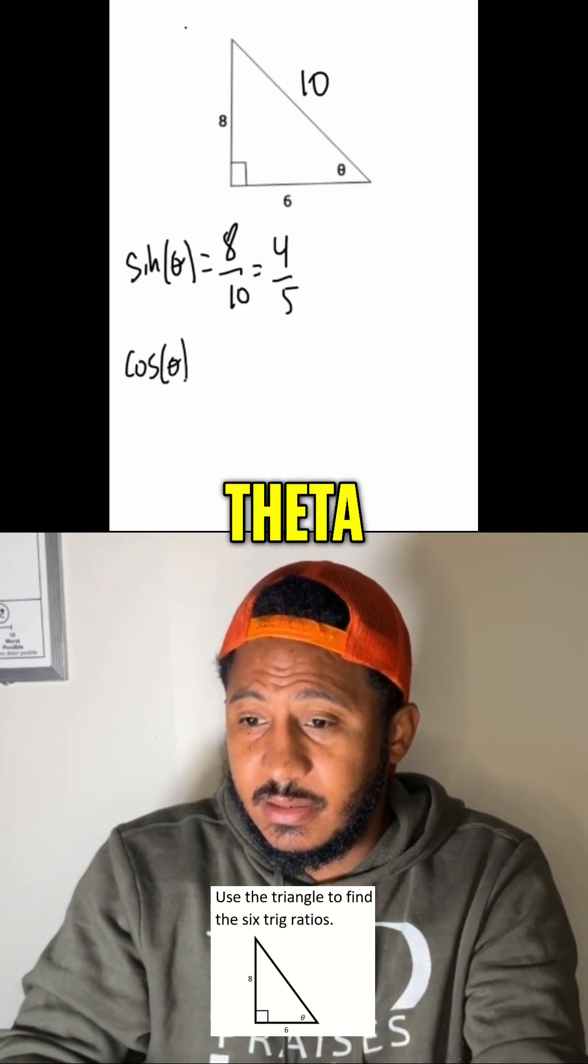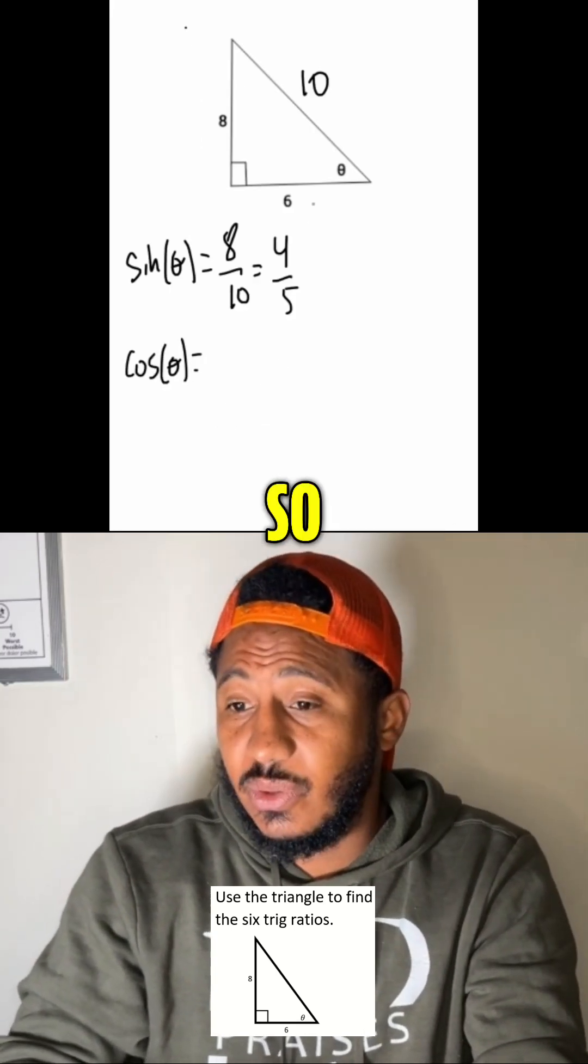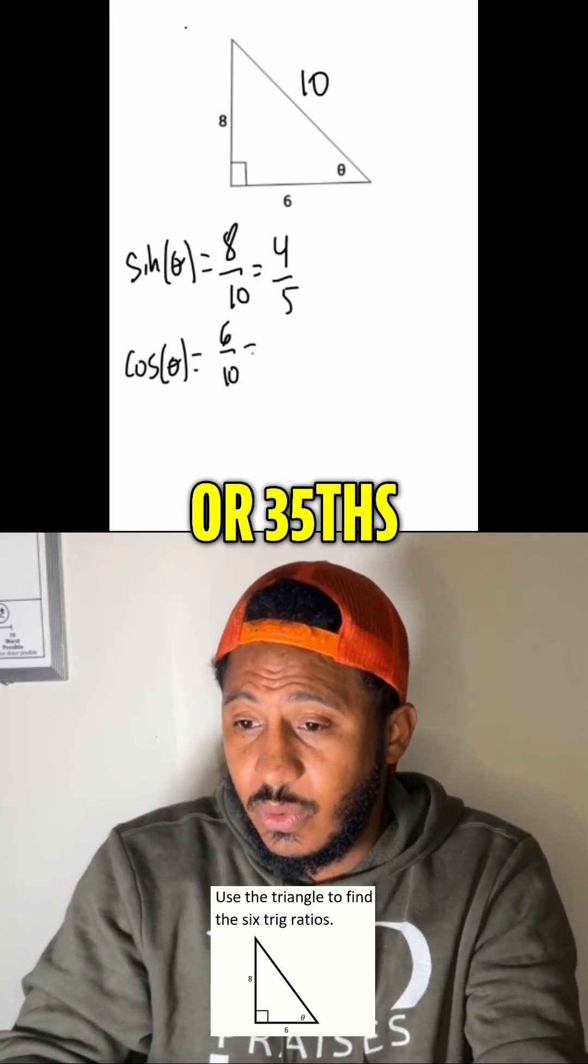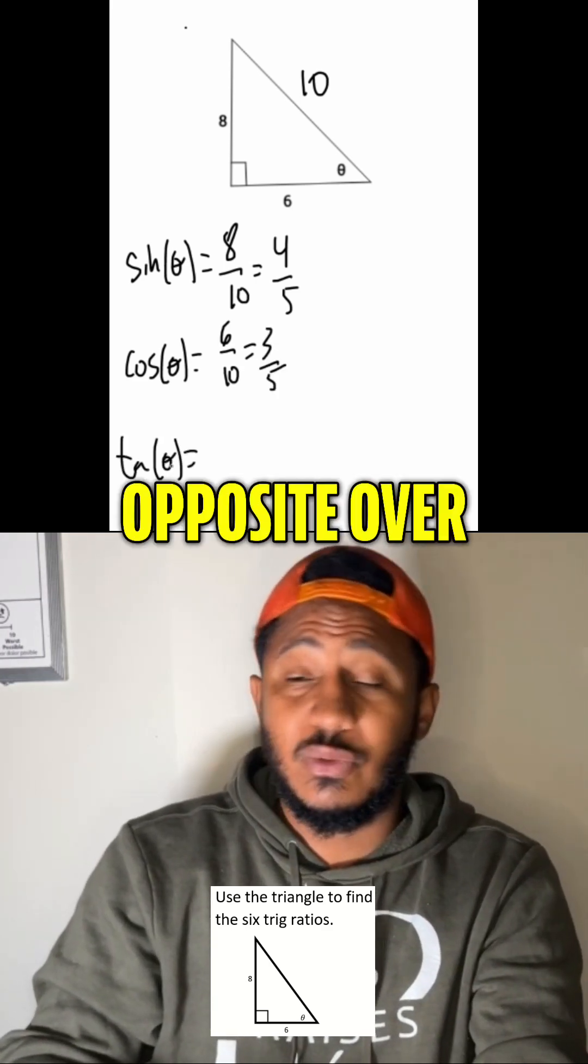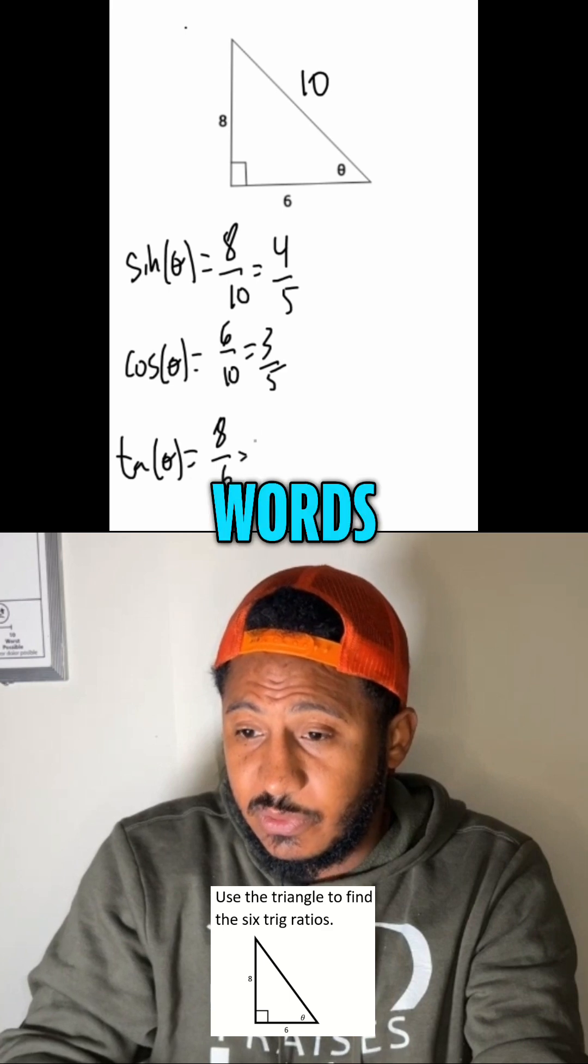The cosine of theta is the adjacent over hypotenuse. So, 6 over 10, or 3 fifths. The tangent of theta is the opposite over adjacent. So, that would be 8 over 6.